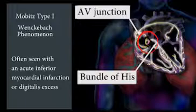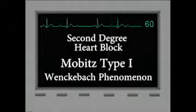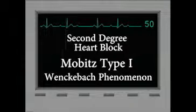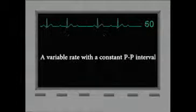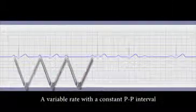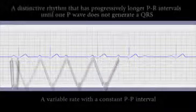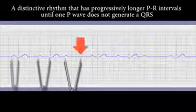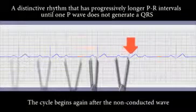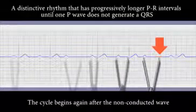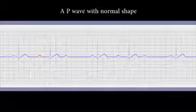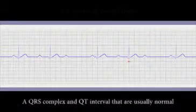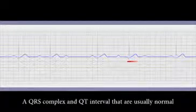This type of heart block is often seen with an acute inferior myocardial infarction or digitalis excess. The EKG characteristics of second-degree heart block, Mobitz type 1, or Wenckebach phenomena, are a variable rate with a constant P-to-R interval, a distinctive rhythm that has progressively longer PR intervals until one P-wave does not generate a QRS. The cycle begins again after the non-conducted wave, with a P-wave of normal shape, and a QRS complex and QT interval that are usually normal.